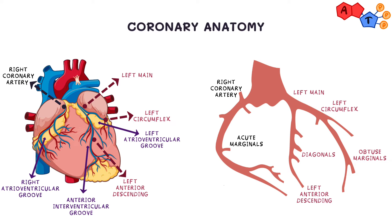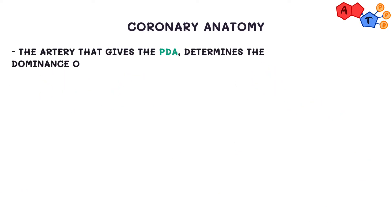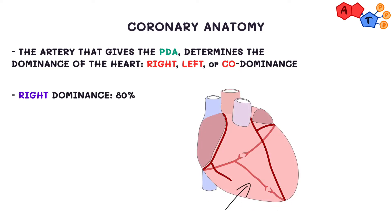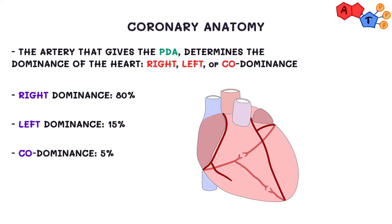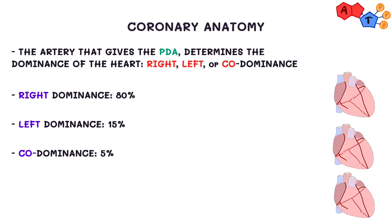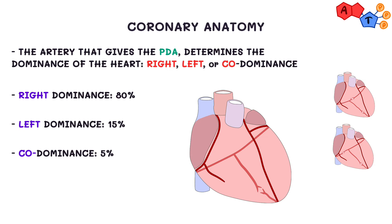The RCA divides to give the PDA or posterior descending artery and posterior lateral branches. The artery that gives the PDA or posterior lateral branches denotes the dominance. Roughly 80% of people are right dominant, meaning the PDA comes off the right coronary artery. 15% are left dominant, and 5% are co-dominant. In left dominant circulation the PDA comes off the left circumflex, and in co-dominant, that distribution is shared between the right coronary artery and the left circumflex.